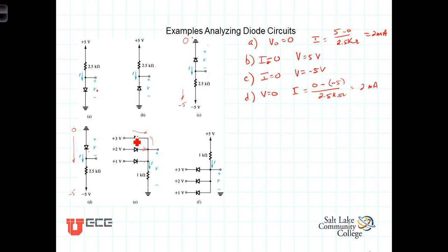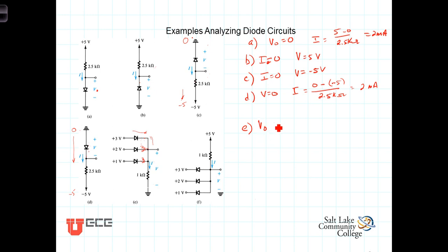Now let's check what happens if the 3-volt diode is conducting. We'd have 3 volts at the node. With 3 volts at the node and 2 volts on the other diode's source, that diode would be reverse biased and not conducting. Similarly, with 3 volts at the node and 1 volt on the third diode's source, that diode is also reverse biased. So the assumption that the 3-volt diode is on and the other two are off is correct. For part E, the output voltage is 3 volts, and current equals 3 volts divided by 1 kilohm, giving 3 milliamps.